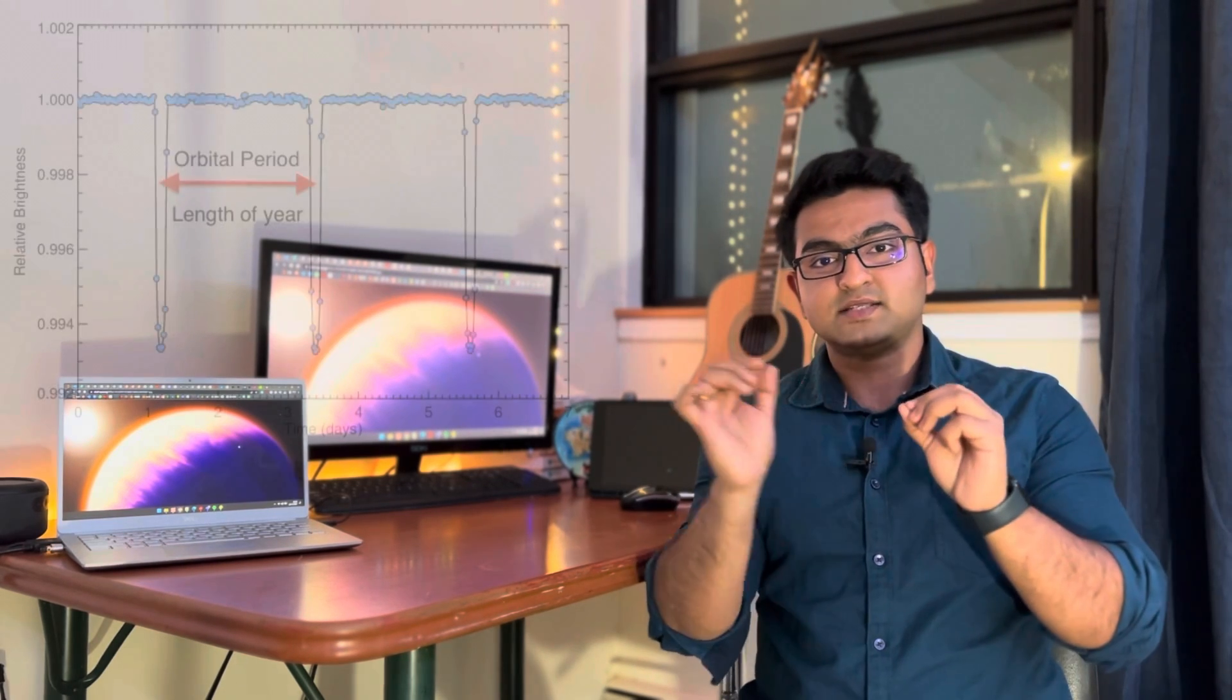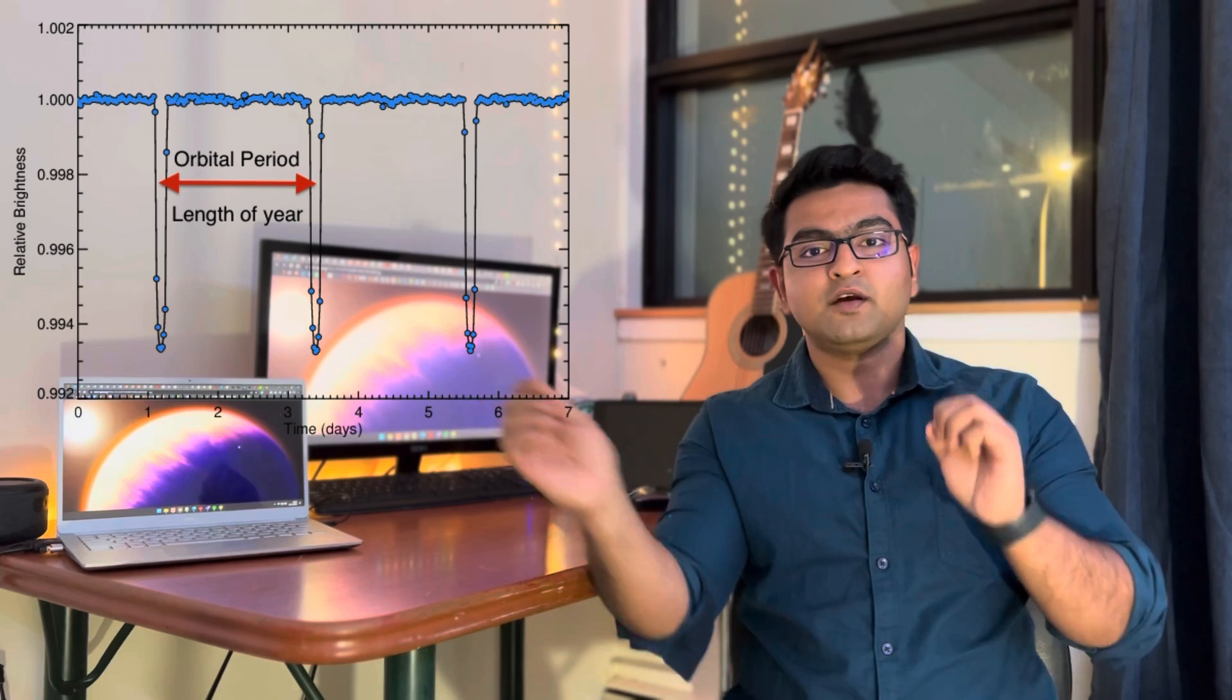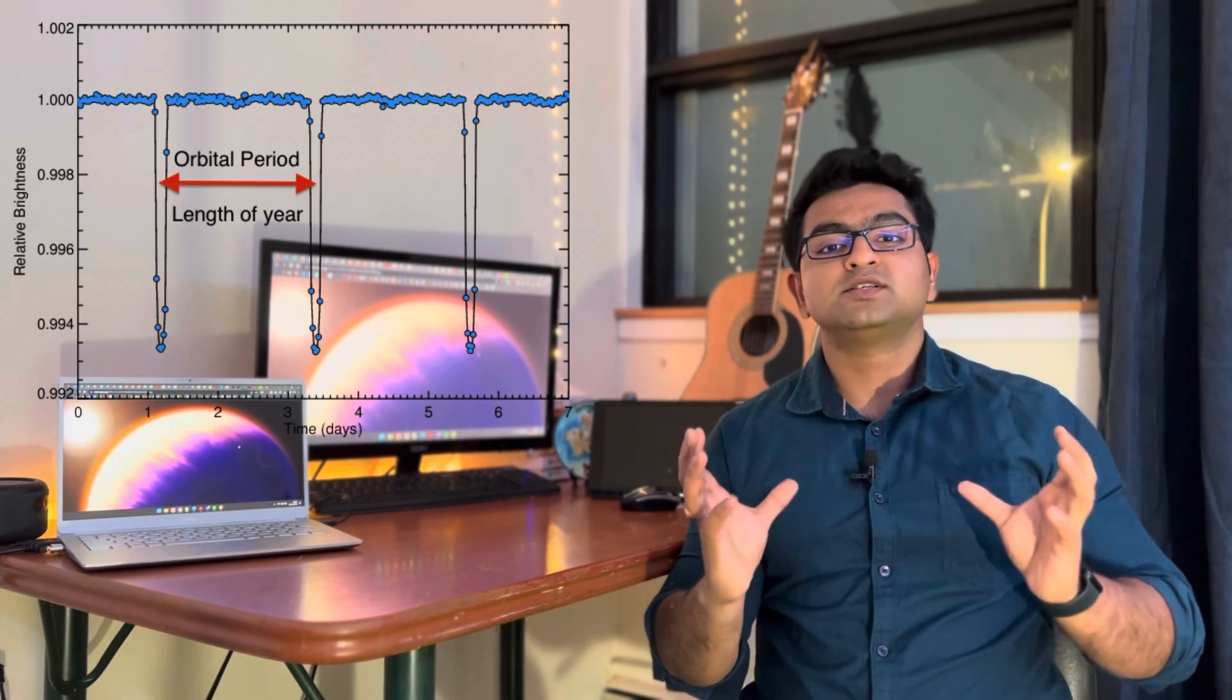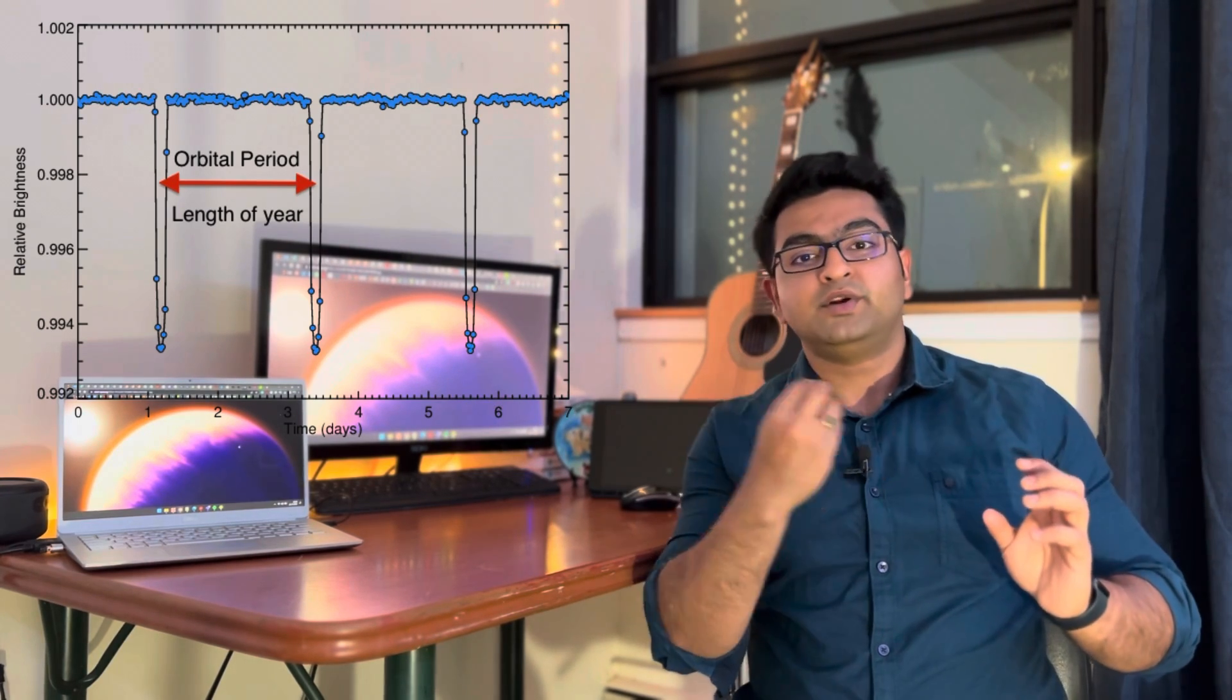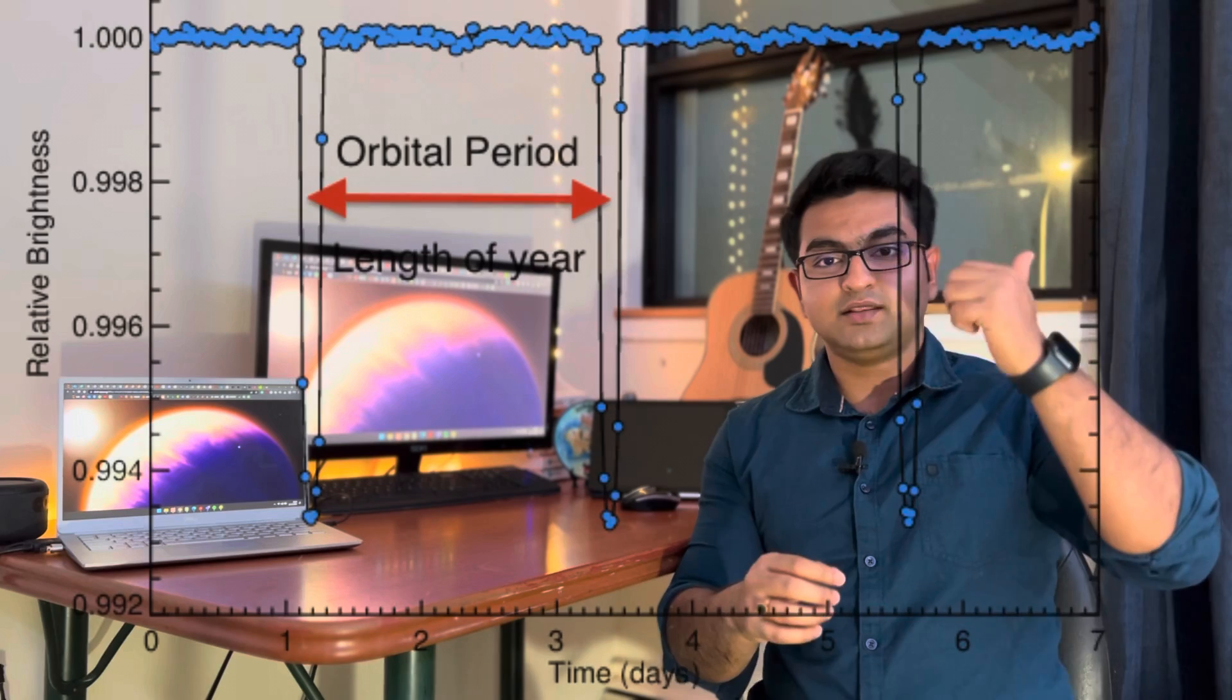Depending on the size and the shape of the light curve, we can predict a lot about the planet. The depth of the light curve talks about how big your planet is. The bigger the planet, the more light it will block and it will create a bigger dip in your brightness. The difference between the peaks of this light curve tells you about the periodicity of the planet around its star.